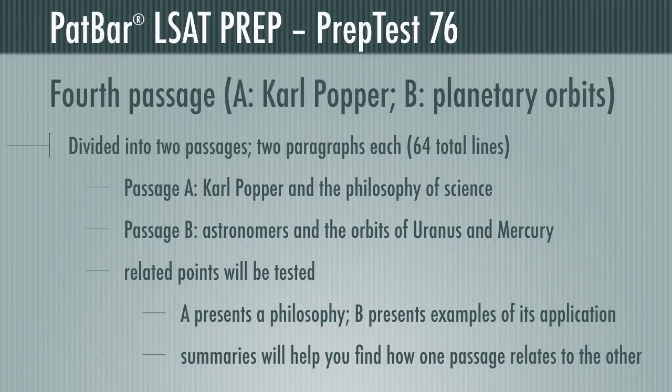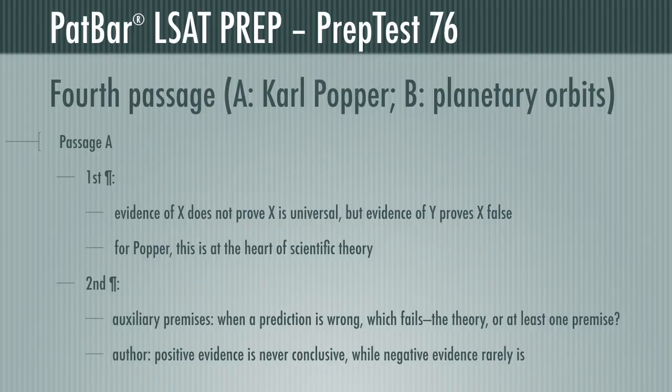As expected, there are related points, and as expected, they will be tested. Your summaries will help you find your way. Your summary of Passage A should outline Popper's fundamental point, which basically says: never mind if every swan you've ever seen is white — a single swan of another color would disprove any hypothesis that all swans must be white. Paragraph 1 specifically says that Popper believes the search for negative evidence is at the heart of scientific research.